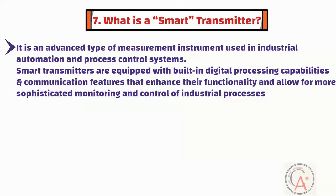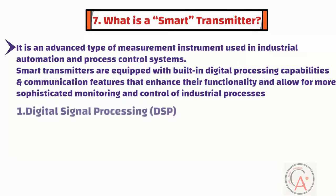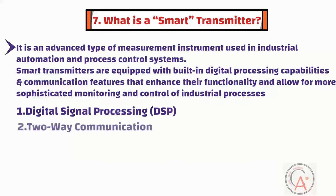Here are the key characteristics and features of smart transmitters. The first characteristic is digital signal processing. Smart transmitters incorporate digital signal processing capabilities, allowing them to perform complex calculations and signal conditioning tasks internally, which helps improve measurement accuracy and reliability. The second characteristic is two-way communication. Smart transmitters are capable of two-way communication with control systems and other devices. They can transmit measurement data to a central control room and receive commands or configuration updates remotely.